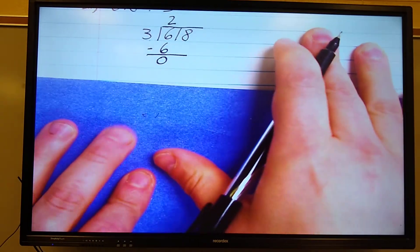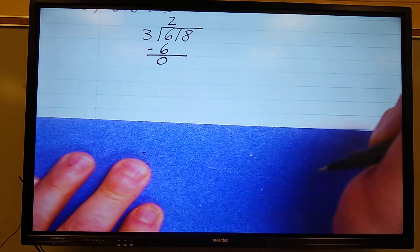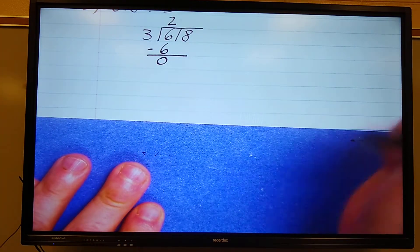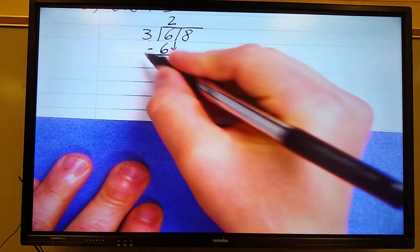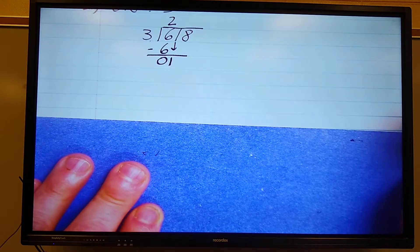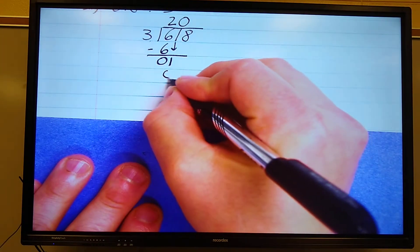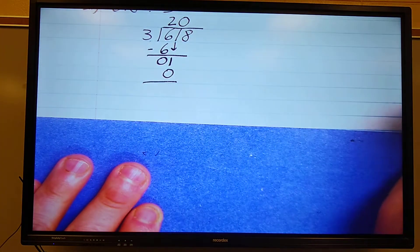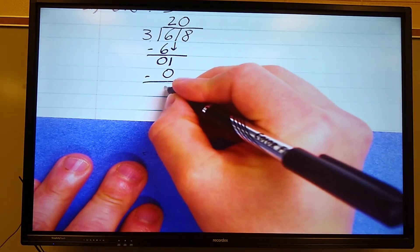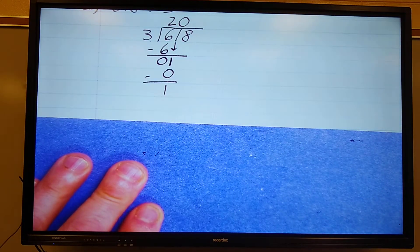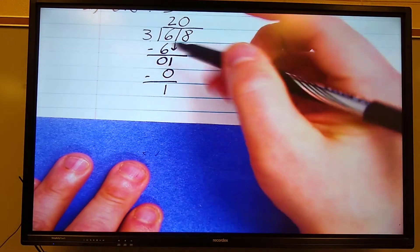My next step is to bring down. Now I can only bring down one number at a time, so I bring down the 1. Now I divide. 3 going to 1, how many times? 0 times. 0 times 3 is 0. That's multiply. My next step is to subtract. 1 minus 0 is 1. After subtract we bring down. I have a number to bring down, I bring down the 8. Remember we only bring down one number at a time.